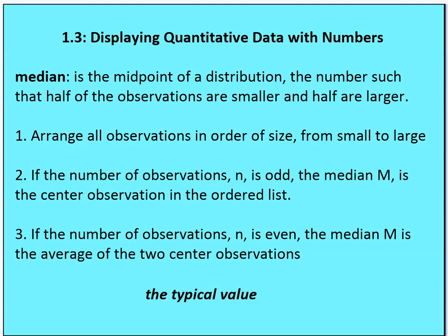If the number of observations is odd, then the median is the center observation in the ordered list. For example, if you have seven observations, then number four in order from smallest to largest is going to be your median. If the number of observations is even, then the median is going to be the average of the two center observations. For example, if you have eight observations, you take observations four and five, add those together, divide by two — you take the mean to find the median when the count of observations is even.